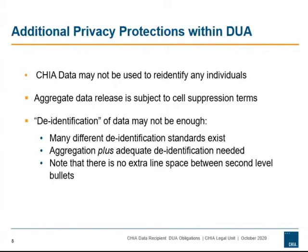Another requirement for any institution or individual receiving CHIA data is the clear understanding that CHIA data may not be used in any manner that seeks to ascertain the identity of an individual. Your institution and your research team is fully responsible to make certain that CHIA data is not used to identify individuals within the data. Additionally, because there is the risk of re-identification of individuals when project data is released, the CHIA data use agreement puts very specific restrictions on what data or data derivatives or data extracts may be released. Aggregate data may be released, but only if it meets cell size restrictions set forth in the data use agreement. Merely making CHIA data de-identified, whether to the HIPAA standard or otherwise, does not always mean the CHIA data may be disclosed.